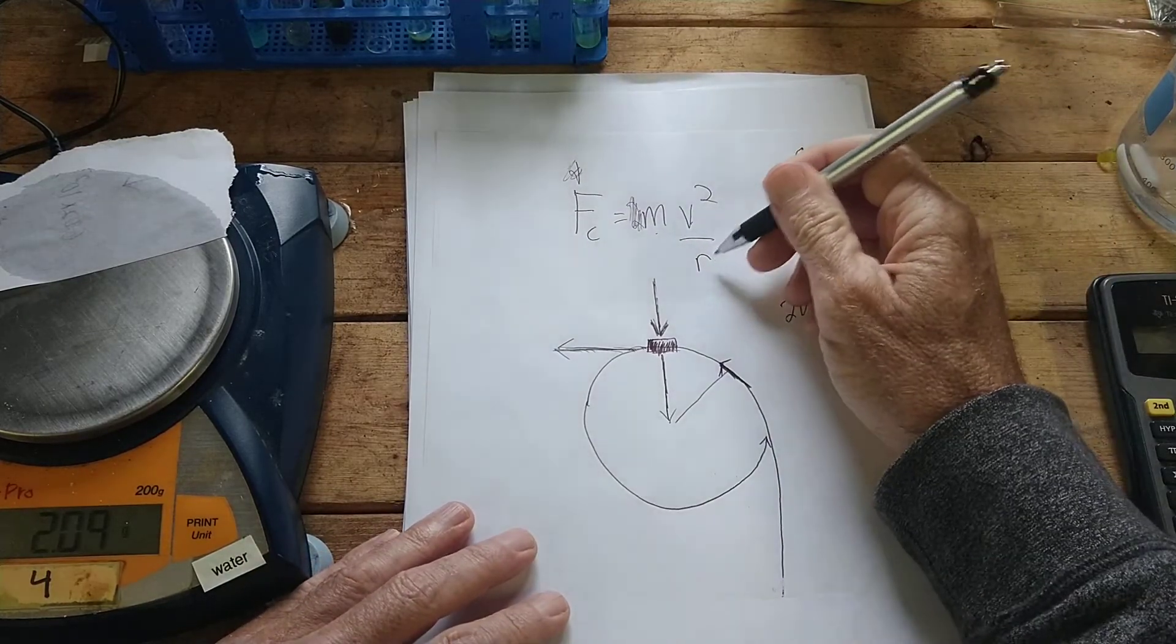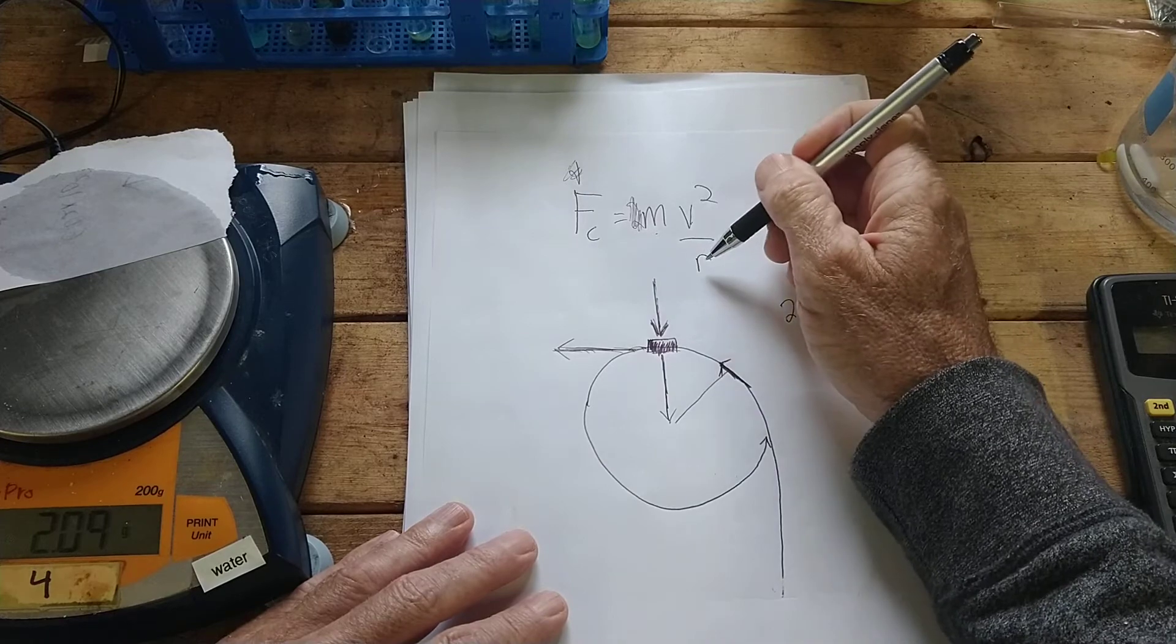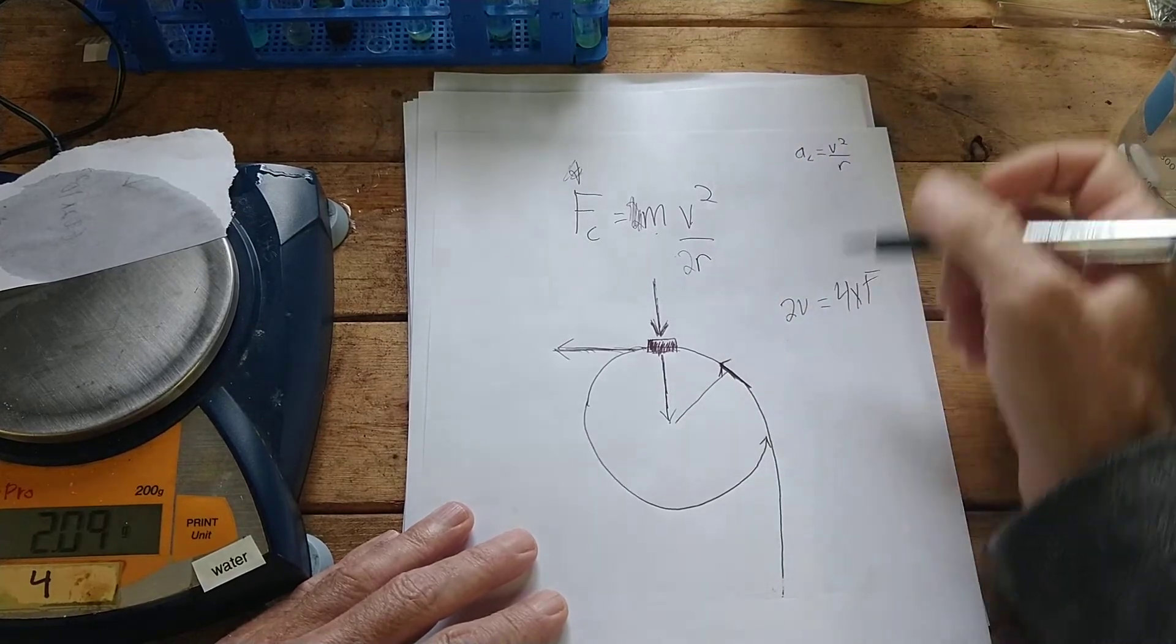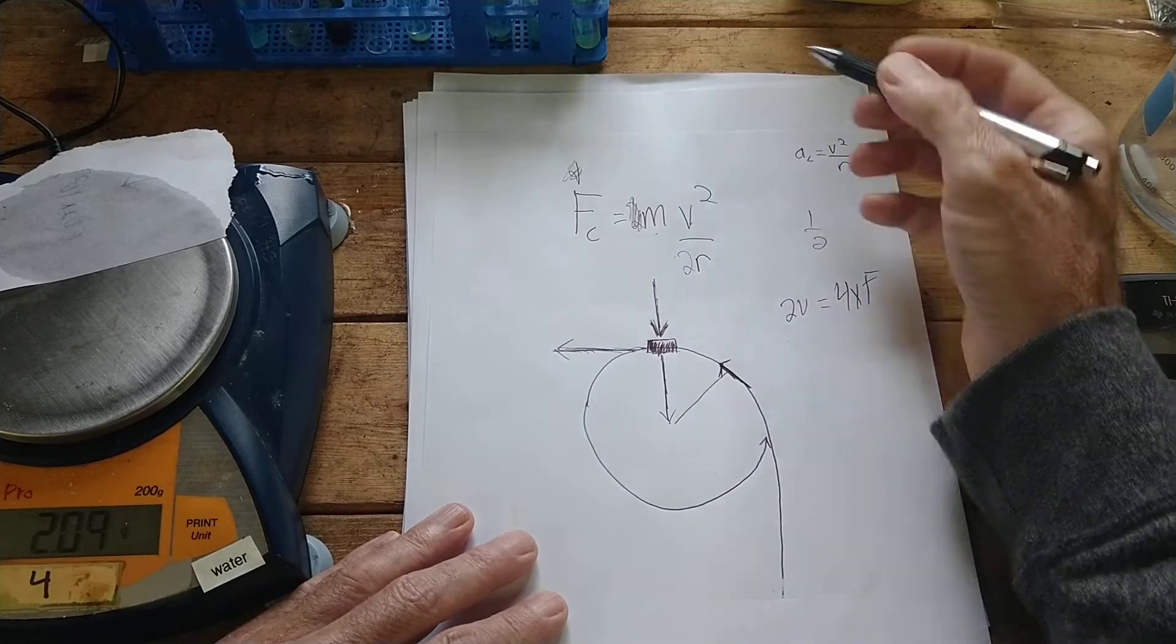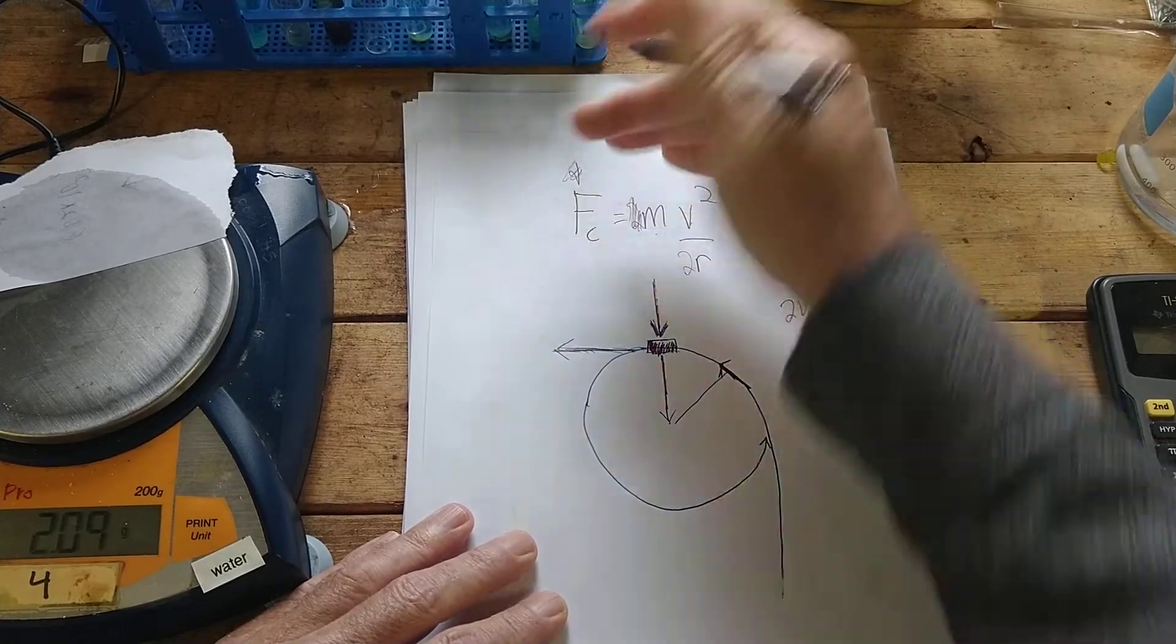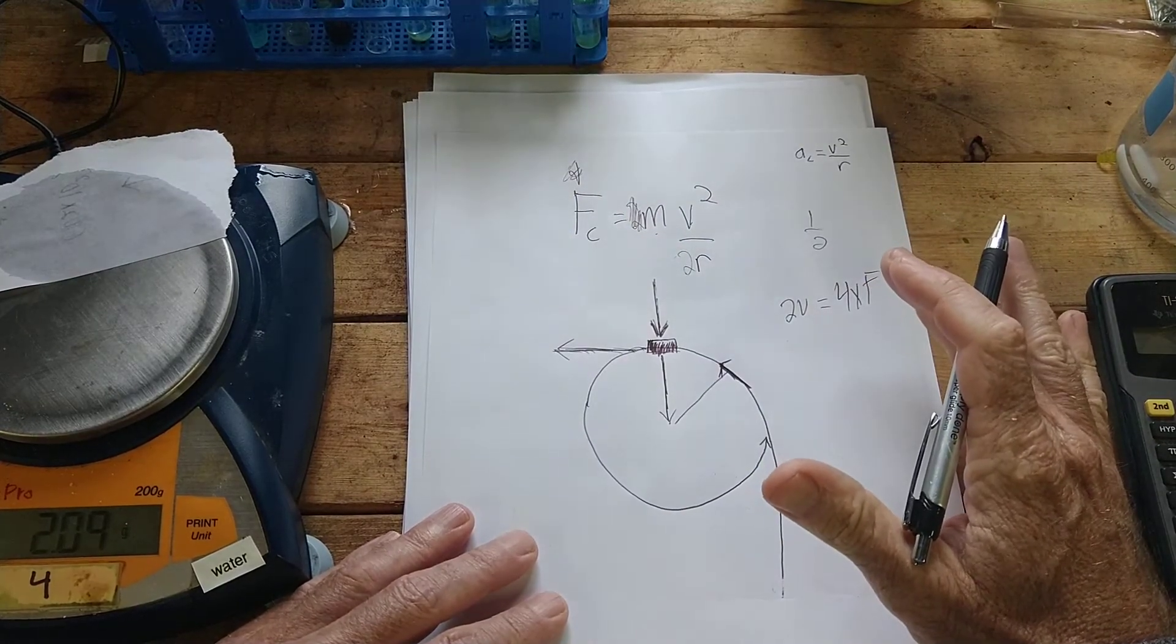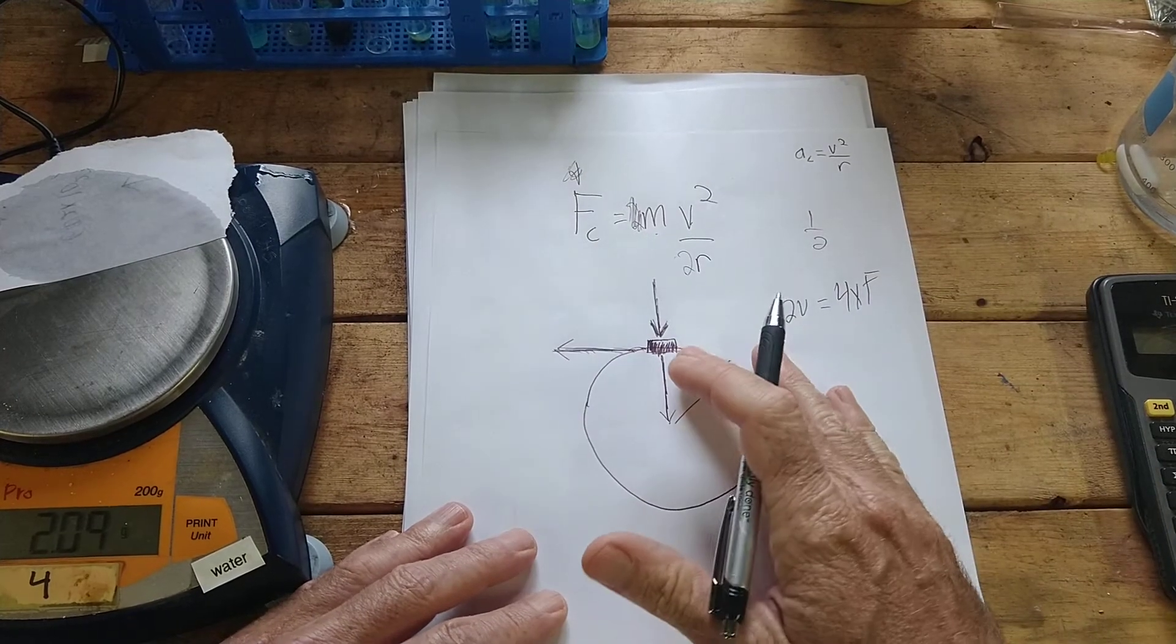What if you doubled the radius? If you change it from being one r down here to two r? If you double the radius, then you end up with one over two, and the force would be half. Now I know I've talked about it quickly, but you can play the video over again.